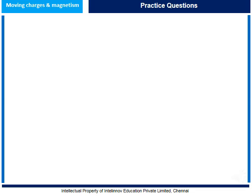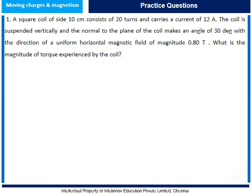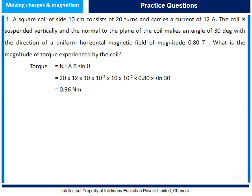Now let us get on with practice questions. Question 1: A square coil of side 10 cm consists of 20 turns and carries a current of 12 amperes. The coil is suspended vertically and the normal to the plane of the coil makes an angle of 30° with the direction of a uniform horizontal magnetic field of magnitude 0.80 Tesla. What is the magnitude of torque experienced by the coil? We know torque = nIAB sin θ, where n is the number of turns, I is the current, A is the area, B is the magnetic field, and θ is the angle. On substituting relevant values, we get torque = 0.96 N·m.